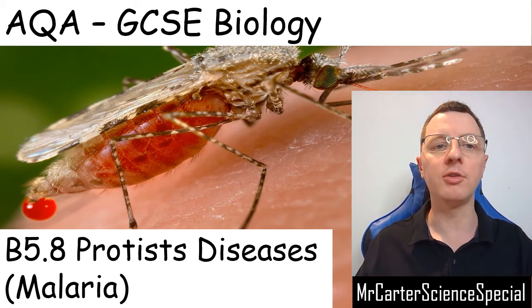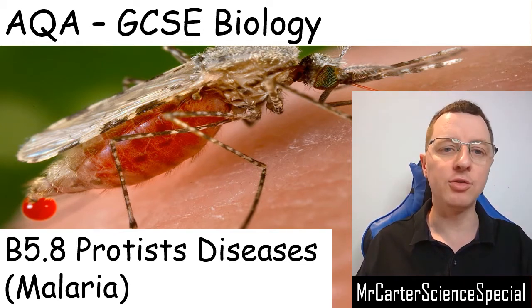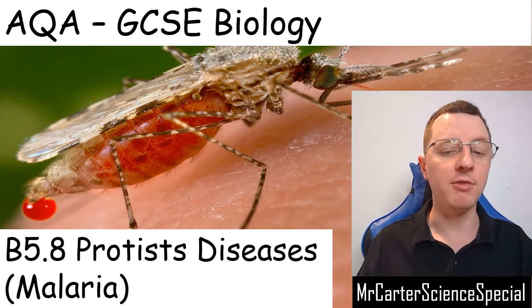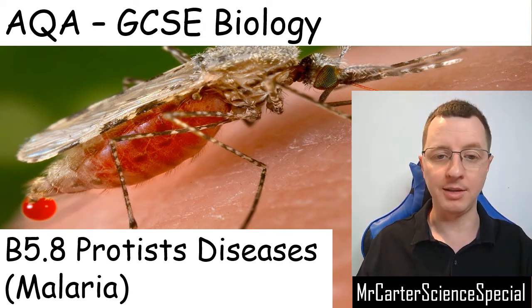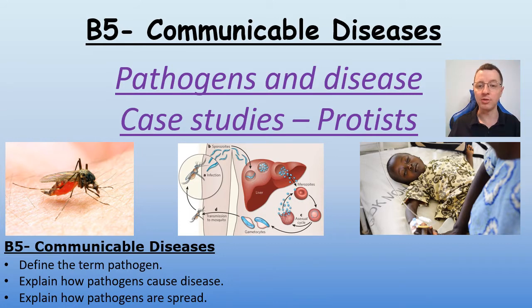Hello and welcome to another Mr Carter Science Special. In this video we'll be looking at protoctist diseases using the case study of malaria, and this fits into the AQA GCSE Biology Specification B5.8. By the end of this video you should be able to understand an example of what a pathogen is and how pathogens can spread and cause disease.